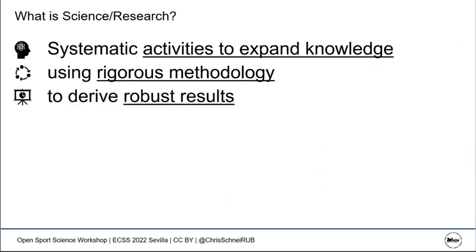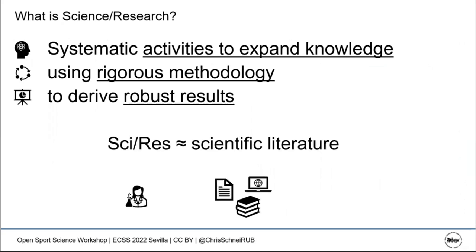To understand why open science is needed, it helps to define science itself — systematic activities to expand knowledge using rigorous methodology and derive robust results. Critically, research is essentially equivalent to the published literature, because what is not published is unknown to everyone except the research group.